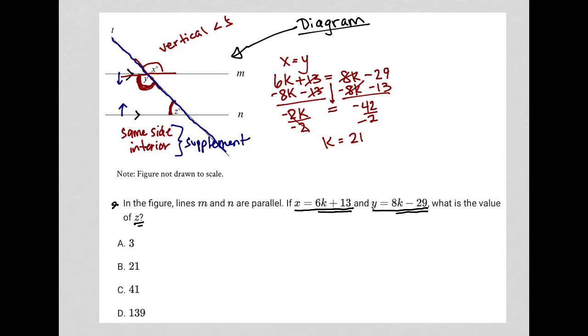Supplementary simply means that they add up to 180 degrees. So that's Y and Z. So I know that Y plus Z is equal to 180 degrees. Now that I know that K is 21, I can actually figure out what Y is.